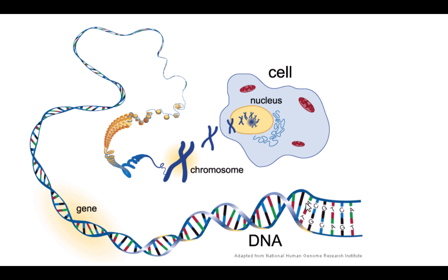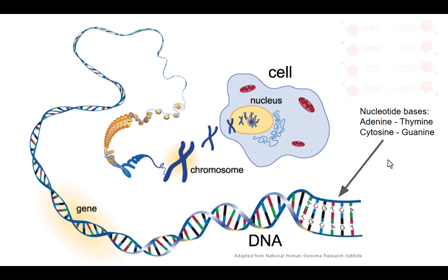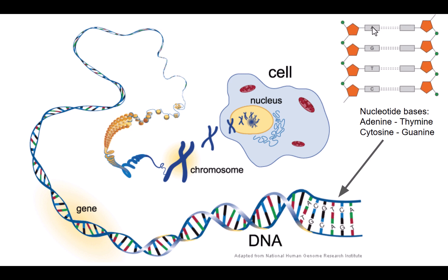The deoxyribonucleic acid is made of these base pairs. You don't need to know the sequencing of the base pairs for your assessment, but it's always useful to learn these things anyway. The bases are called adenine, thymine, cytosine, and guanine, and they always pair up with adenine joining with thymine, and cytosine joining with guanine in DNA. This diagram shows you the sugar phosphate backbone and the nucleotide base pairs, but you don't need to know that for your assessment.